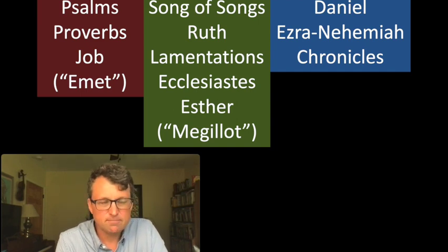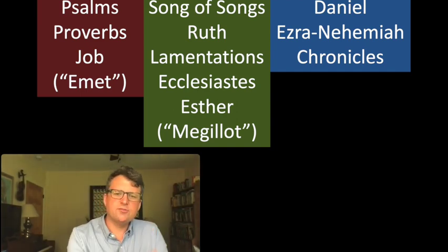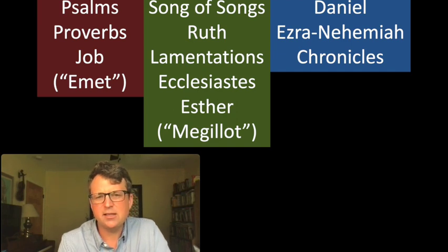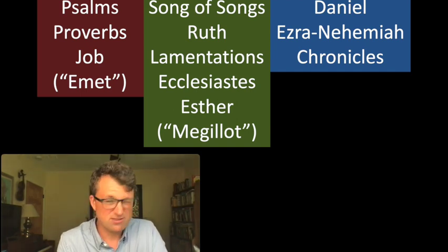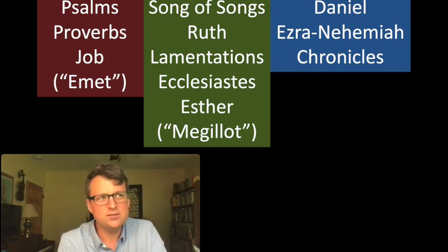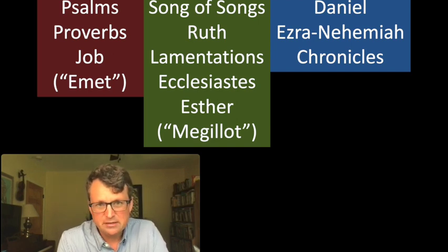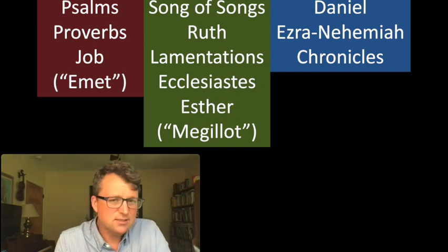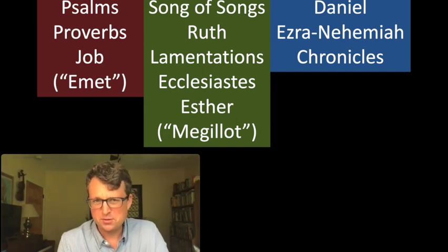They're thought of as functioning as a unit — the songs, poetry, and deep reflection of ancient Israel. Then you have a subgroup of the writings called the Megillot, or the five scrolls: Song of Songs, Ruth, Lamentations, Ecclesiastes, and Esther. You might say those have nothing in common. Ruth is a story about a young Moabite woman who finds her way into Judah. The Song of Songs is ancient love poetry. Lamentations is ancient grief poetry. Ecclesiastes is ancient philosophical reflection in a somewhat cynical tone. And Esther is a story about a young Jewish woman surviving in the court of a foreign king.